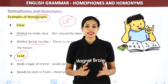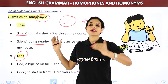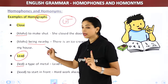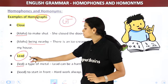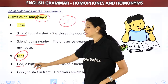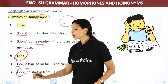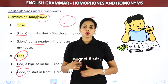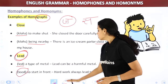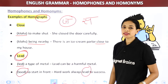Next word: 'lead.' It has two pronunciations. 'Lead' (rhymes with 'led') — it's a type of metal — 'lead can be a harmful metal.' 'Lead' (rhymes with 'feed') — to go in front, to guide — 'the first one will lead and the others will follow,' or 'hard work always leads to success.'